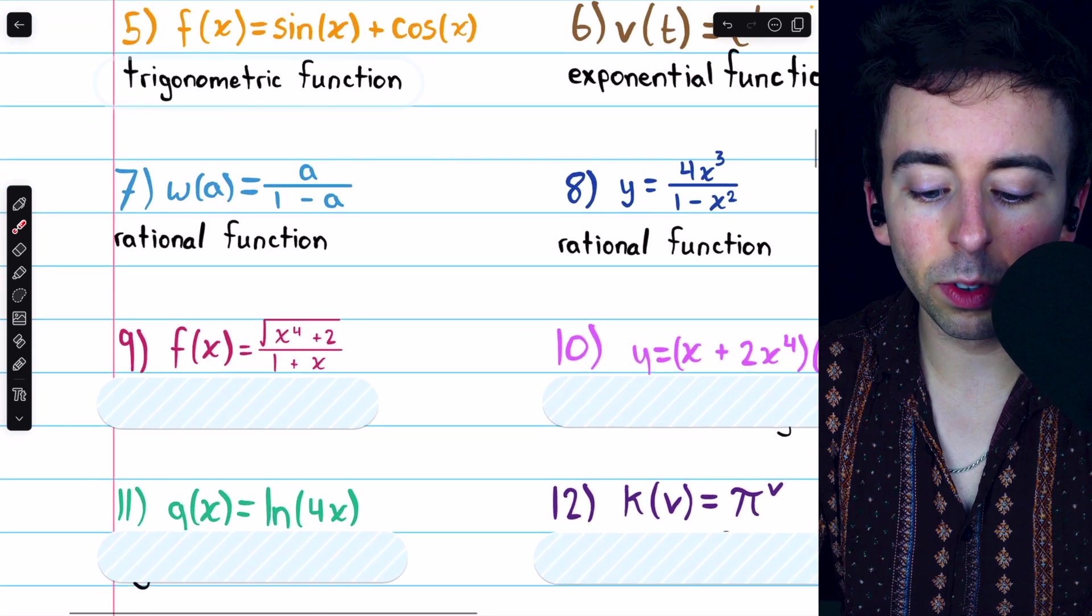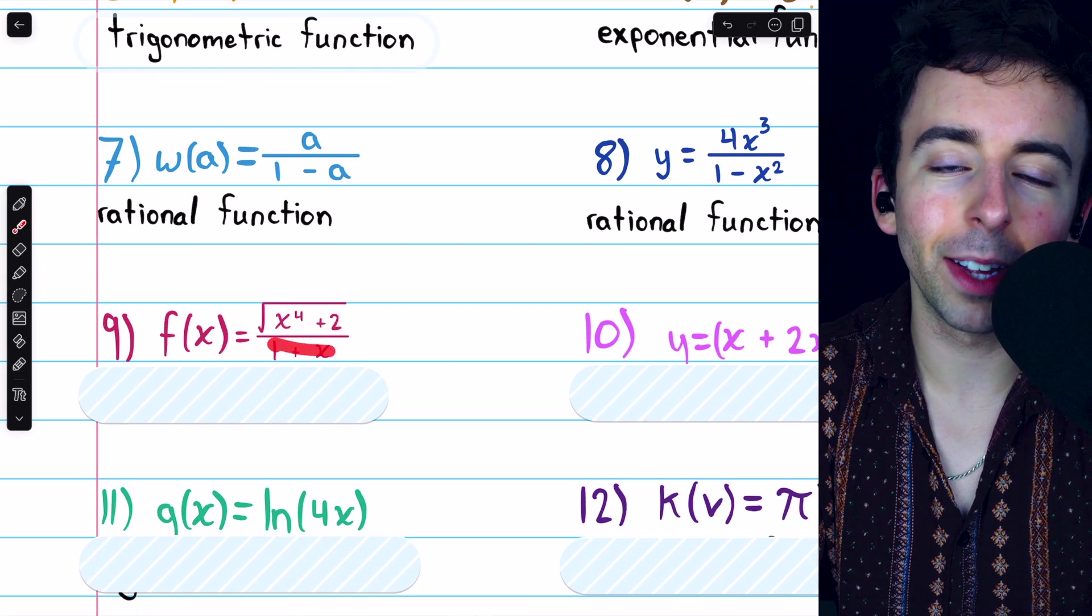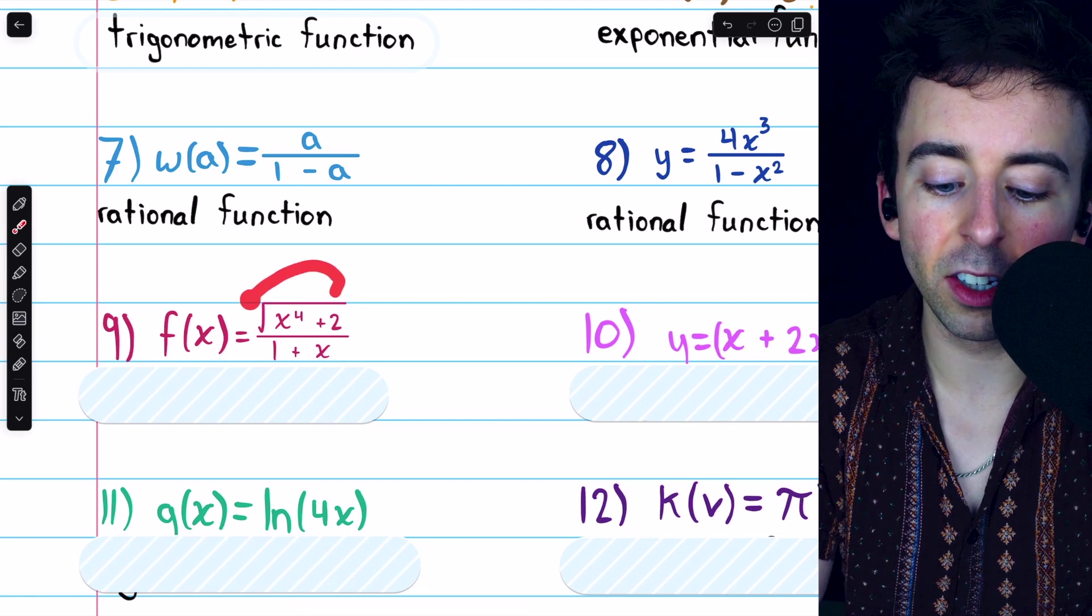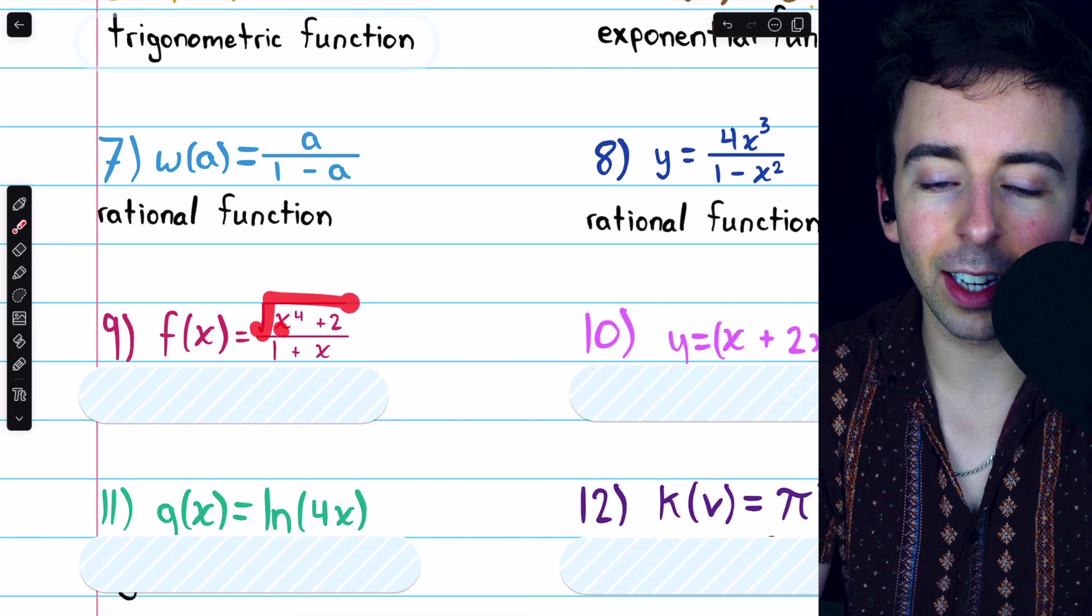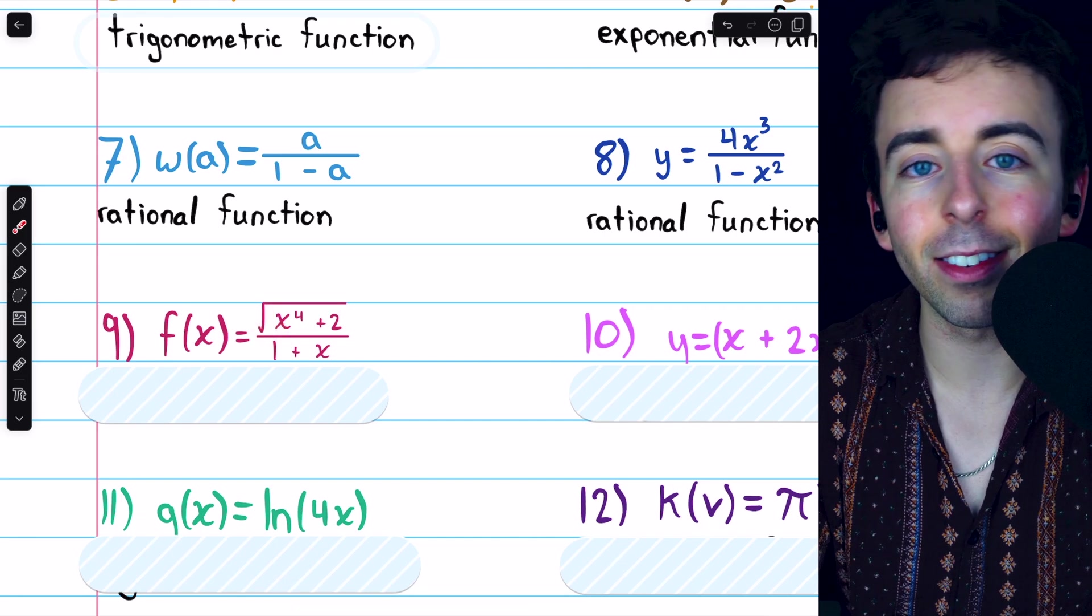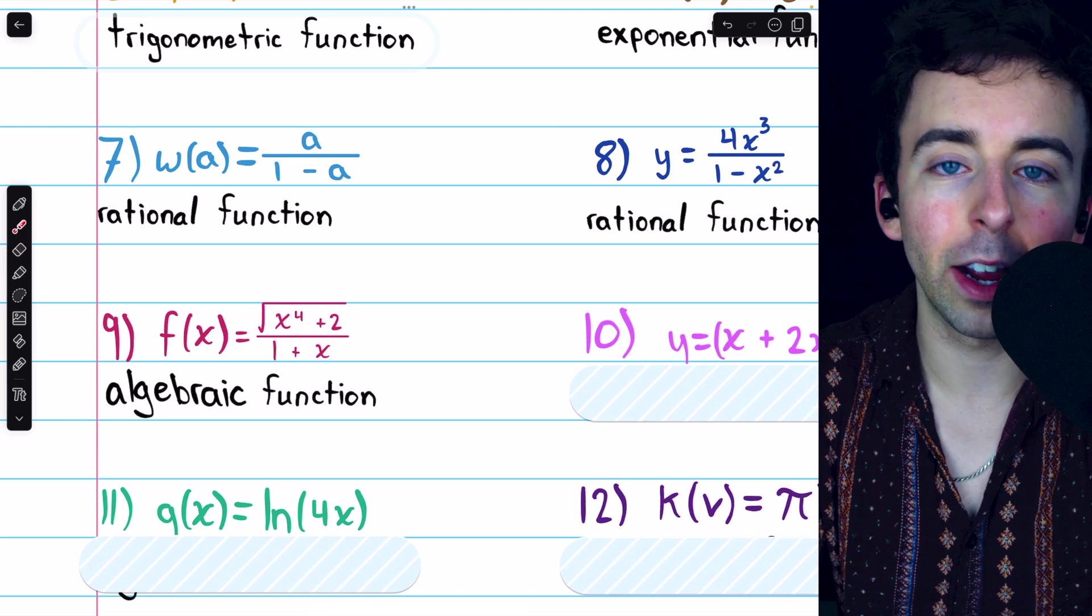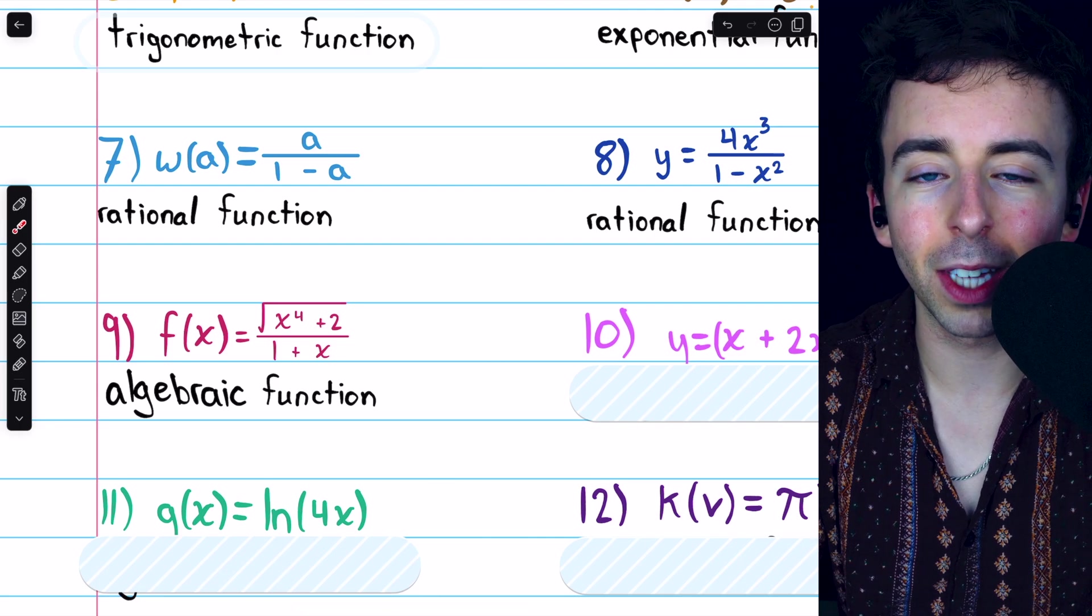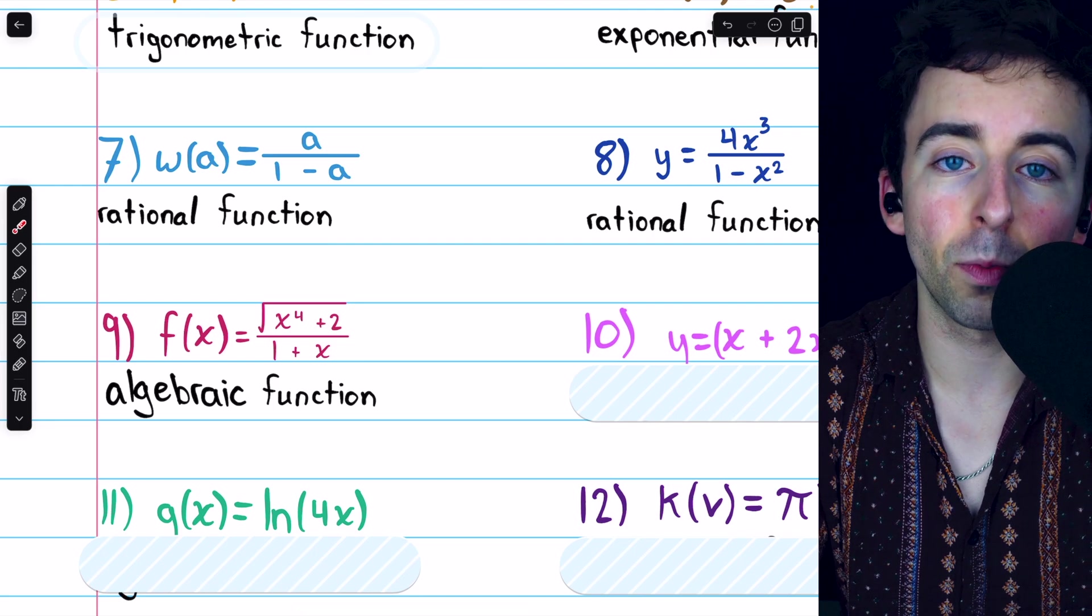Number nine, f of x equals the square root of x to the 4 plus 2 divided by 1 plus x. This is not a ratio of polynomials because the numerator is not a polynomial. We can't have variables stuck in square roots in polynomials, so this is not a rational function because it's not a ratio of polynomials. This is just an algebraic function. It's a function that can be constructed using addition, multiplication, subtraction, division, and square roots. That's an algebraic function.